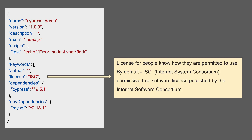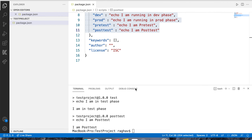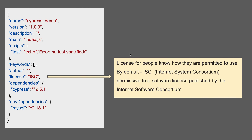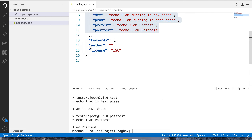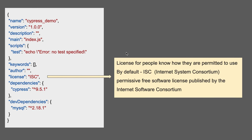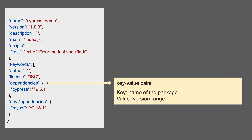The license section is important — it lets people know how they are permitted to use your project and what the restrictions are. By default, the license is ISC, which stands for Internet System Consortium — a free software license. You can change it so that people know what they are authorized to use and what the restrictions are.